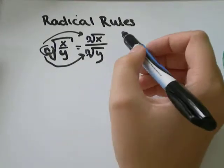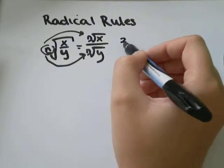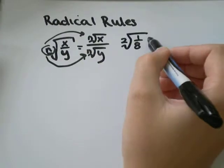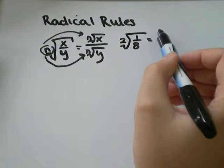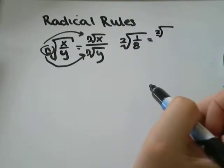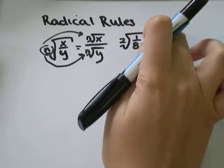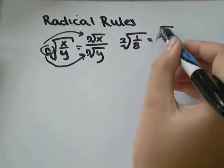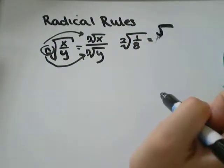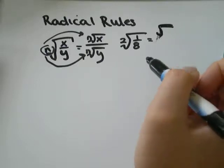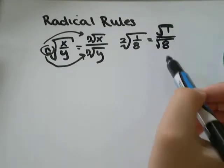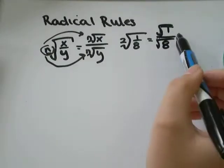So for example, the square root of 1 over 8 would be the square root — you don't have to write the 2 for square root, and if you don't see any number written out there, just assume it's a 2 — that would be the square root of 1 over the square root of 8.